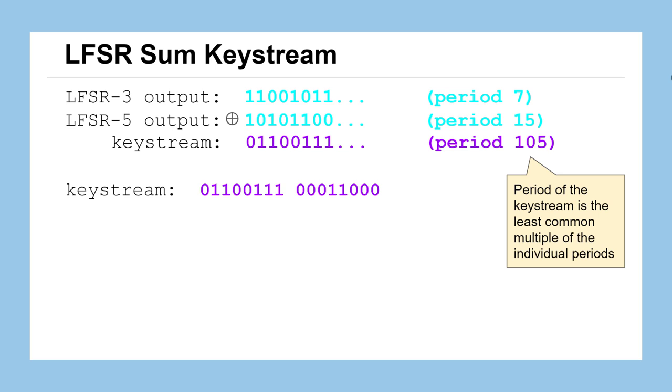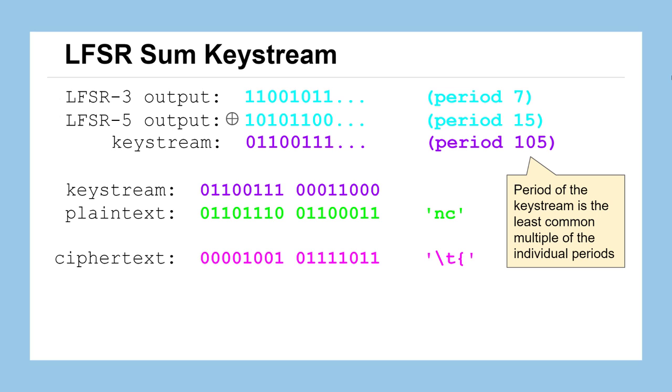Say we take the first 16 bits from that keystream and use that to encrypt two pieces of plaintext here, lowercase n and lowercase c. We can see the ASCII representation of that plaintext written out in binary. We can XOR the keystream with the plaintext to determine our ciphertext message in binary, which converts to the ciphertext slash T, or the tab button, and then a left curly brace. That is what the LFSR sum cipher will do. It operates in the end very similarly to a simple one LFSR system, but we'll see it does add some security.